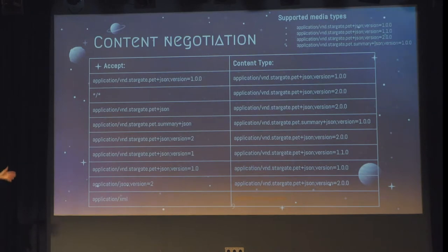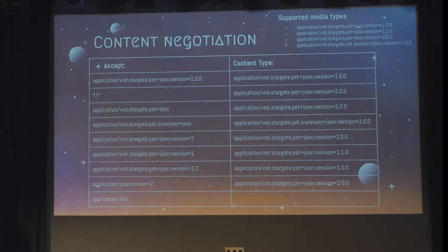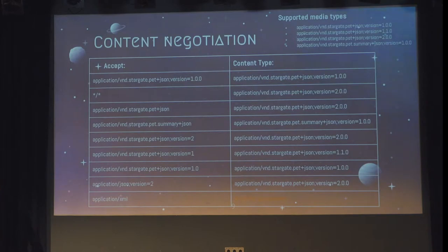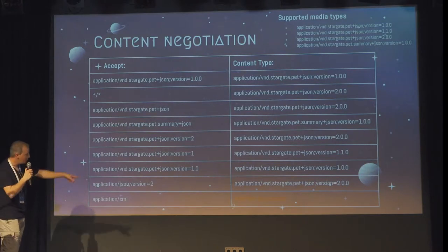You can use semantic versioning, so if you ask for the representation with version one, you will get the latest one available of version one. This eases client evolution, because we can deploy a new media type with a new version and still maintain the old one, giving the client developer time to update. If you ask for something that is not supported, like application/xml, you will get a 406 Not Acceptable.